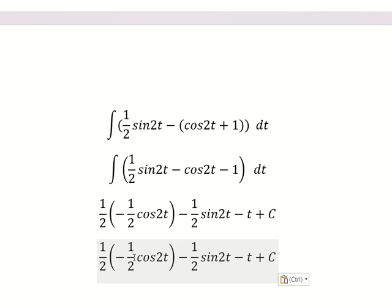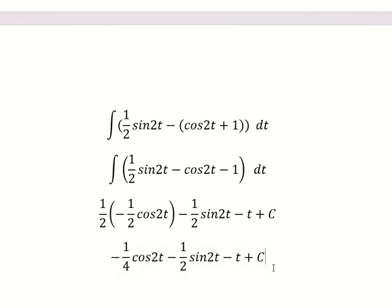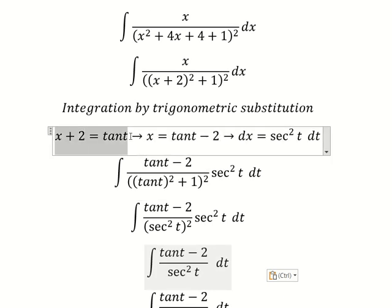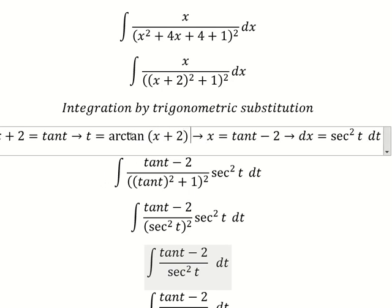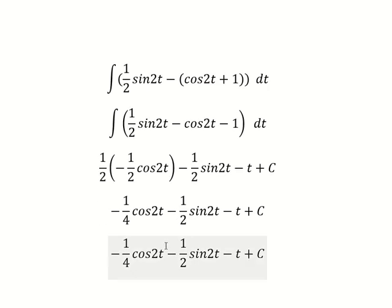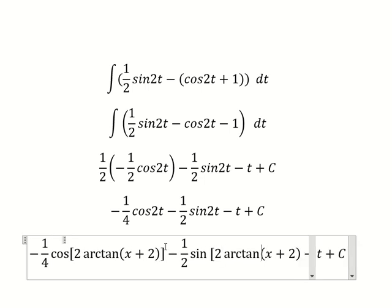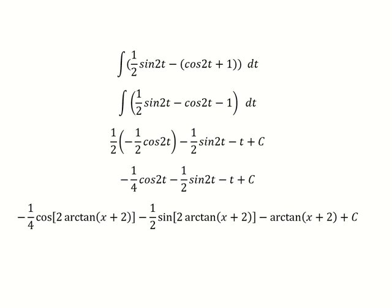We have one-half multiplied by this, giving negative one-quarter cos(2t). For t, we use t equals arctan(s + 2), so we substitute back to change the variable. This is the final answer. Thank you for watching.